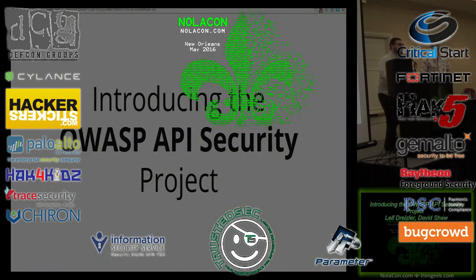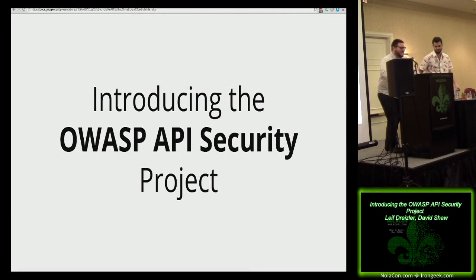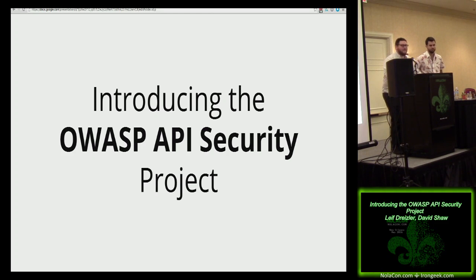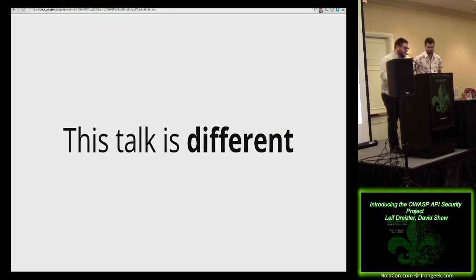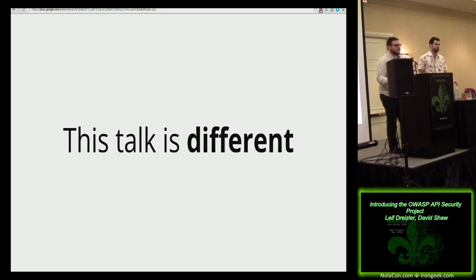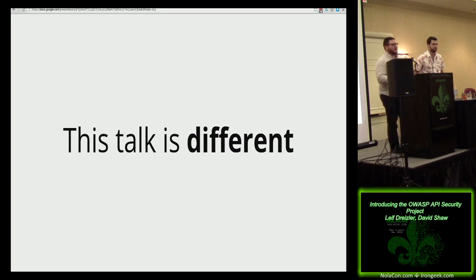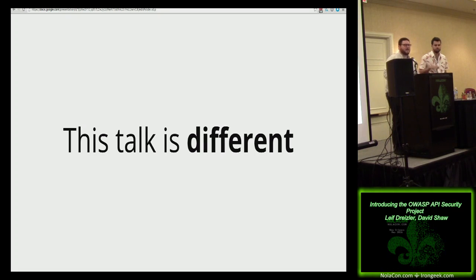Welcome to our talk. This is the introduction to the OWASP API Security project, which is a project that Leif and I have been working on for about the last eight months or so. We're really happy to finally be unveiling that and hopefully getting some of you involved. What we did as our research for this project we consider somewhat preliminary — we basically took the data and statistics we could find and compiled that into what we think is a pretty good first step. But really more than anything else, this is a call for participation.